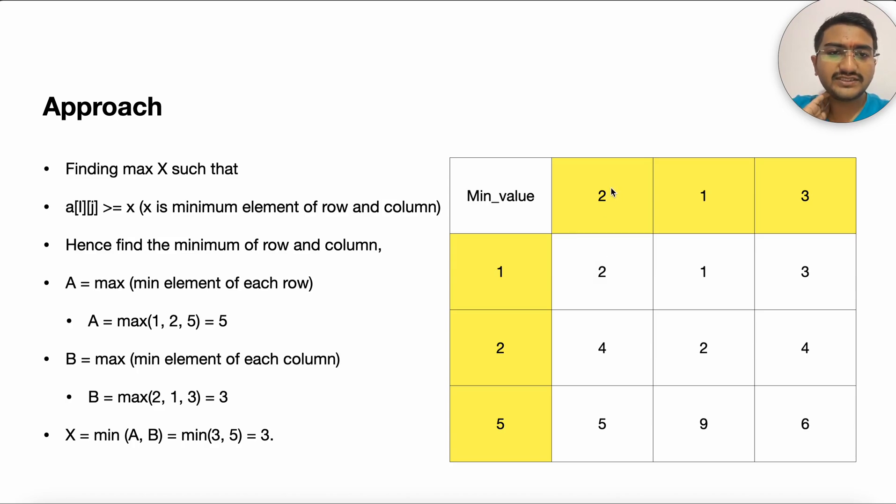Coming to the columns, so the first column minimum element is 2, 4, 5, which is 2. Then 1 and then similarly 3.